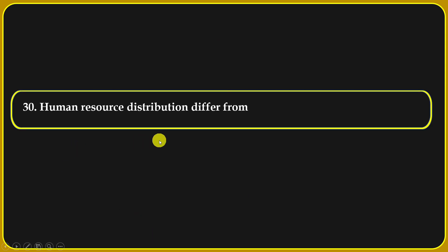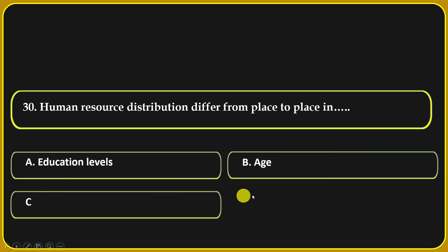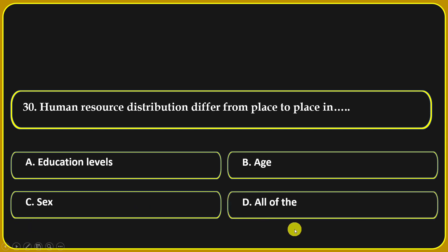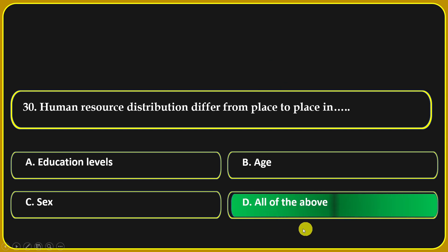Human resource distribution differs from place to place in: education levels, age, sex, or all of the above. All of the above — that means education level, age, and sex differ from place to place.